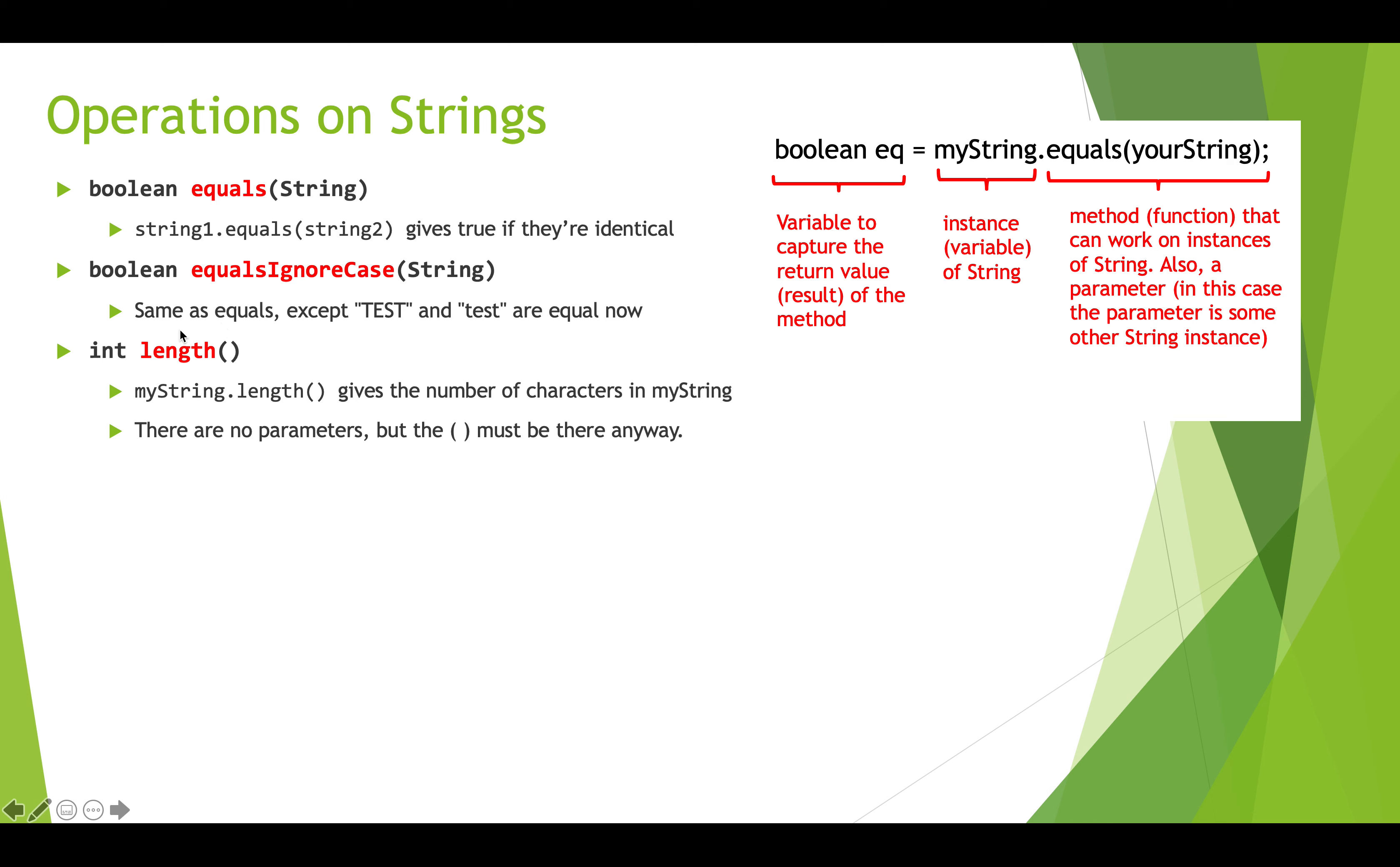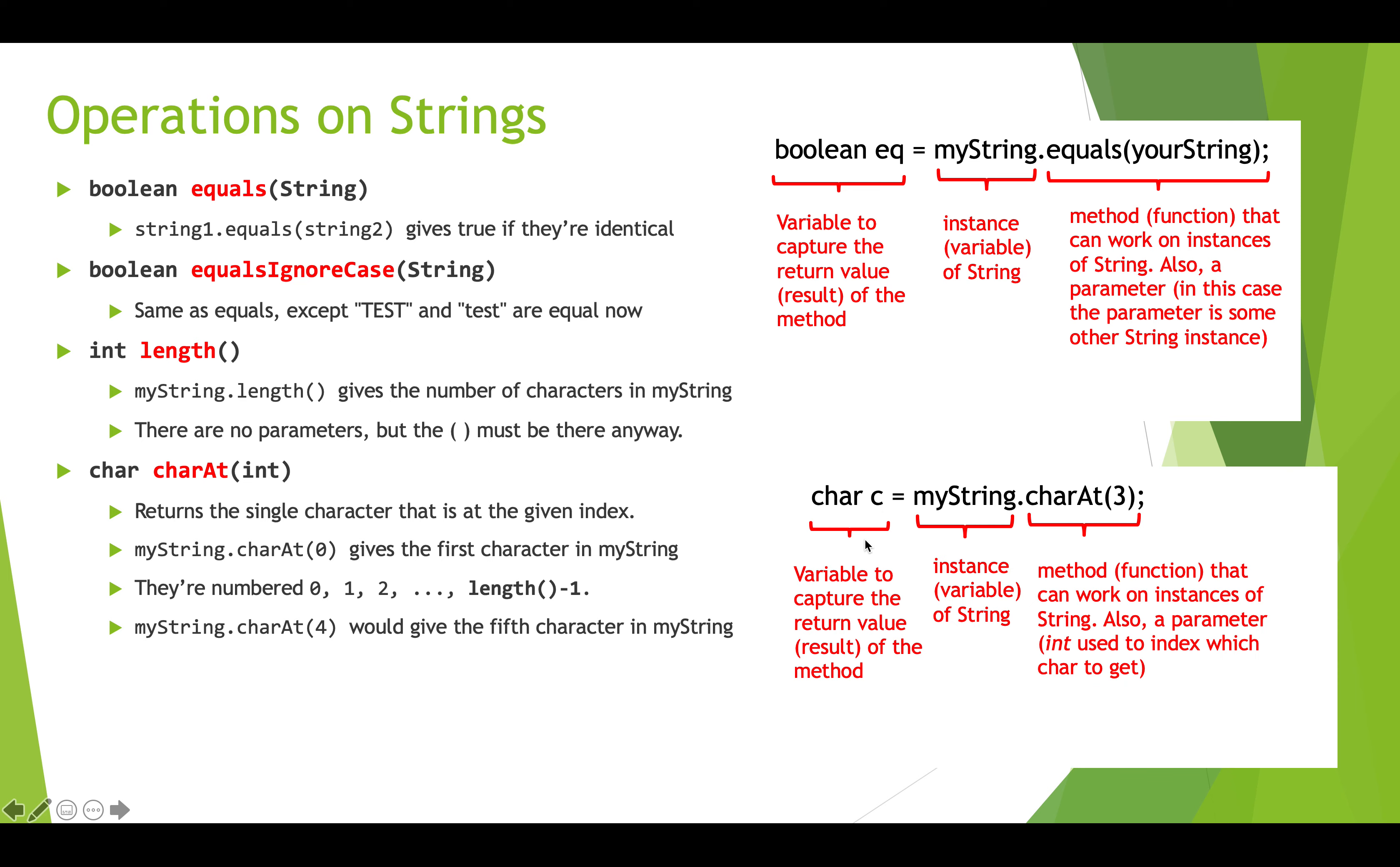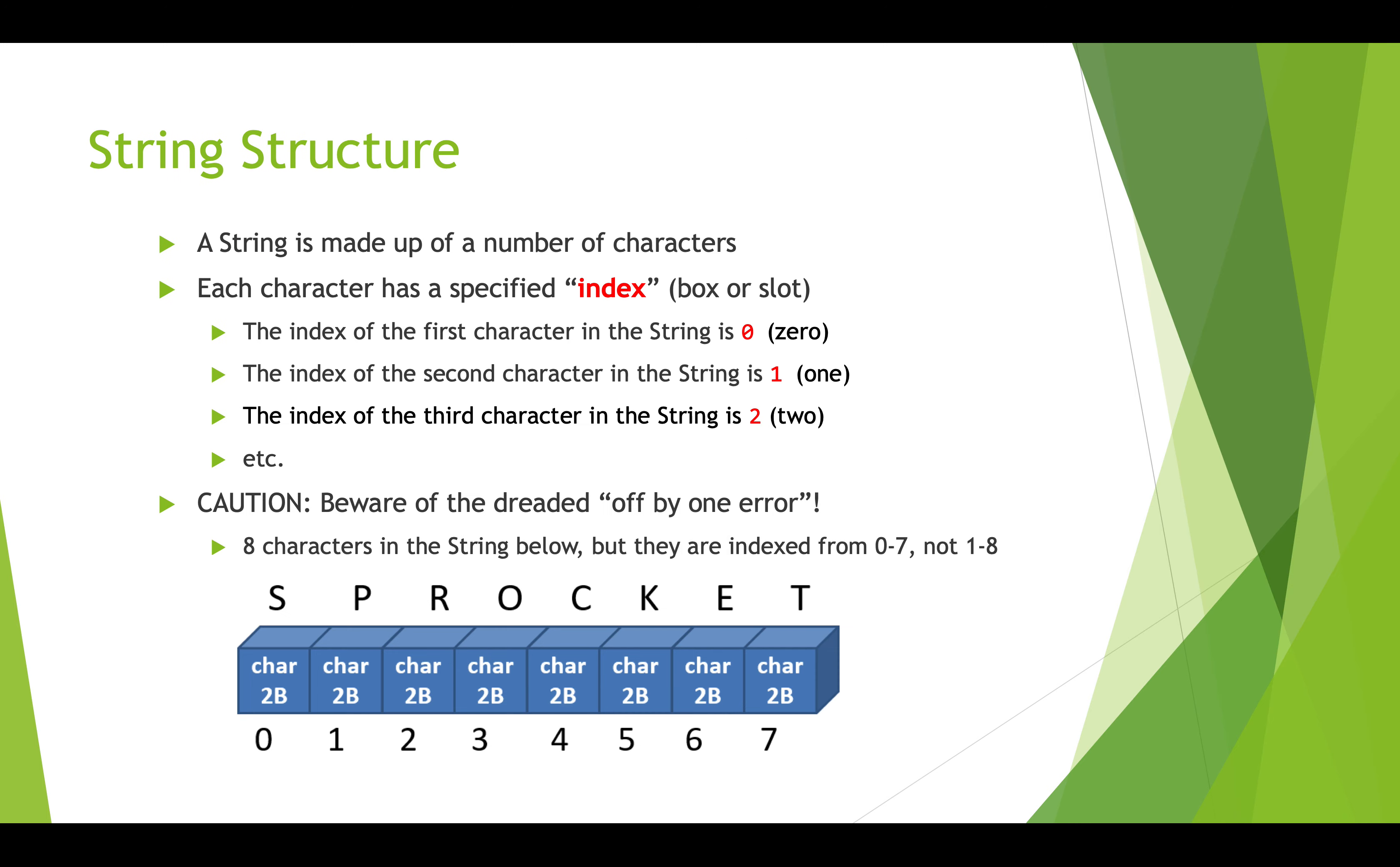Length, we've already seen, counts the number of characters and returns an integer. And charAt is another really important method on strings. What charAt does is it gives us a single character from within the string using an integer, which is the index. Thinking back to that diagram with the slots, we can get the character that's in a very specific slot by giving a number. This will return a char. Here we have char c equals myString dot charAt three. Char c is the variable we create to capture the return value. myString is our instance variable and charAt is the method we're calling. We're passing in three as the parameter. So in our original slide with sprocket, charAt three would return O.